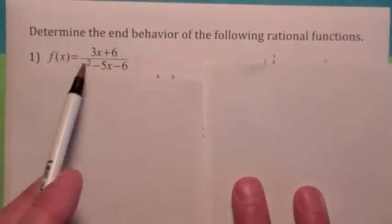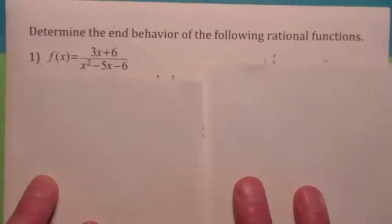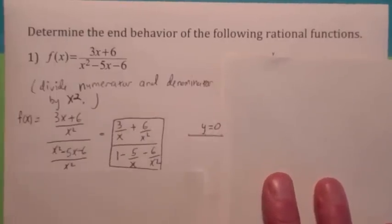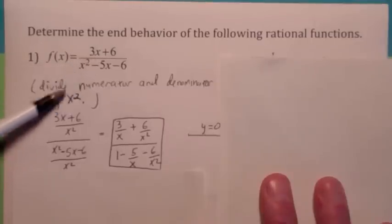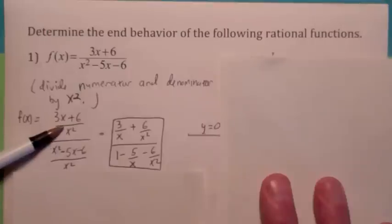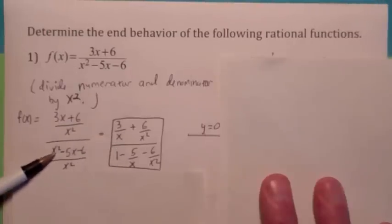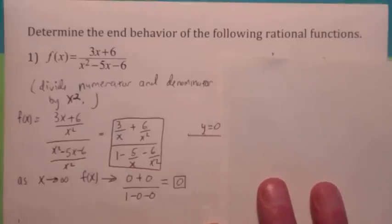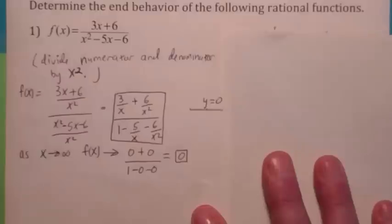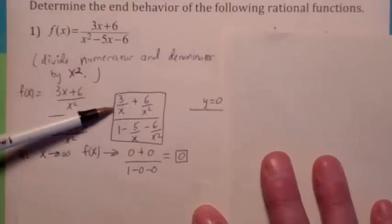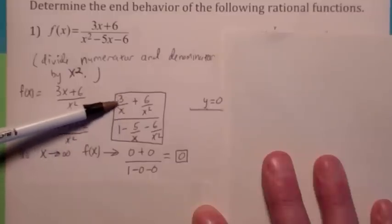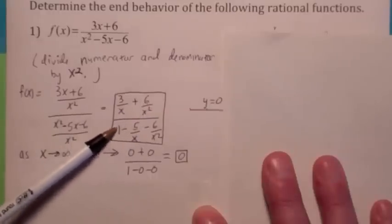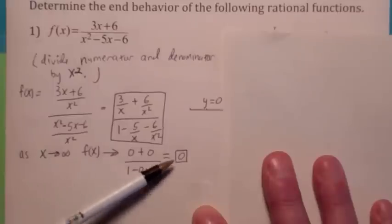Let's look at some specific examples. Top has degree 1, bottom has degree 2 — so we expect y equals 0. Here's why: divide the numerator and denominator by x squared. You get 3 over x plus 6 over x squared on top, and 1 minus 5 over x minus 6 over x squared on the bottom. As x goes to positive infinity — plug in something like 100 — 3 over 100 is getting close to zero, and so is everything else. You just have 1 on the bottom, so as x goes to infinity, the function approaches 0 over 1, which is 0. That's why.